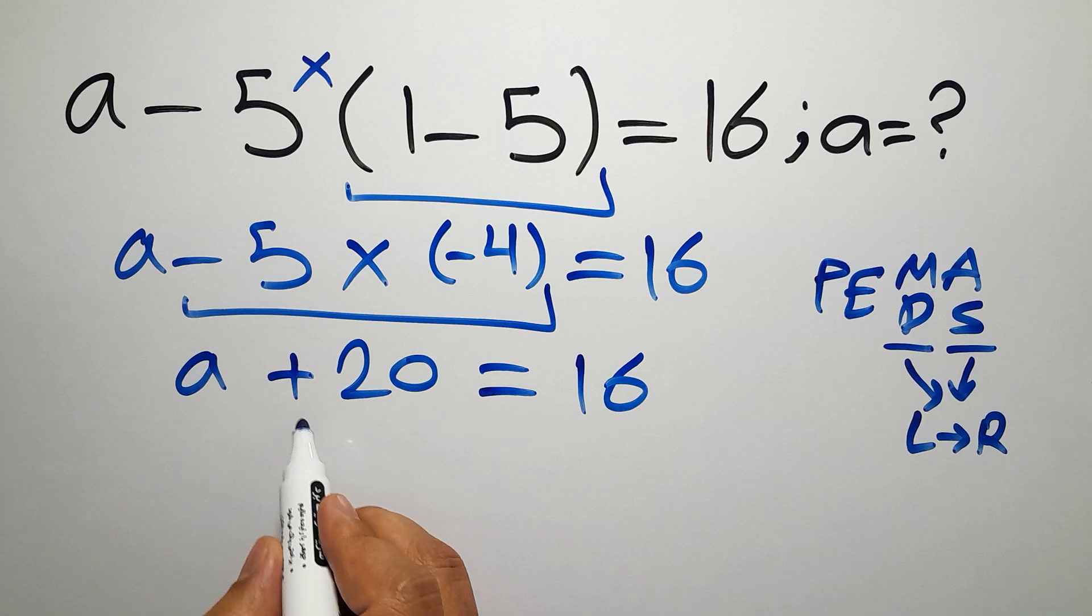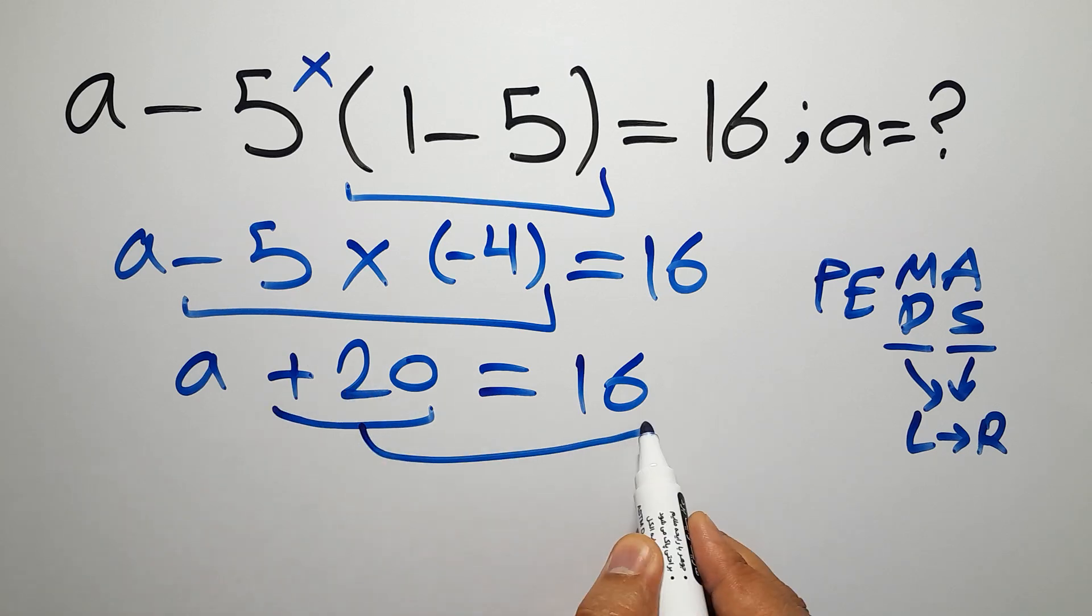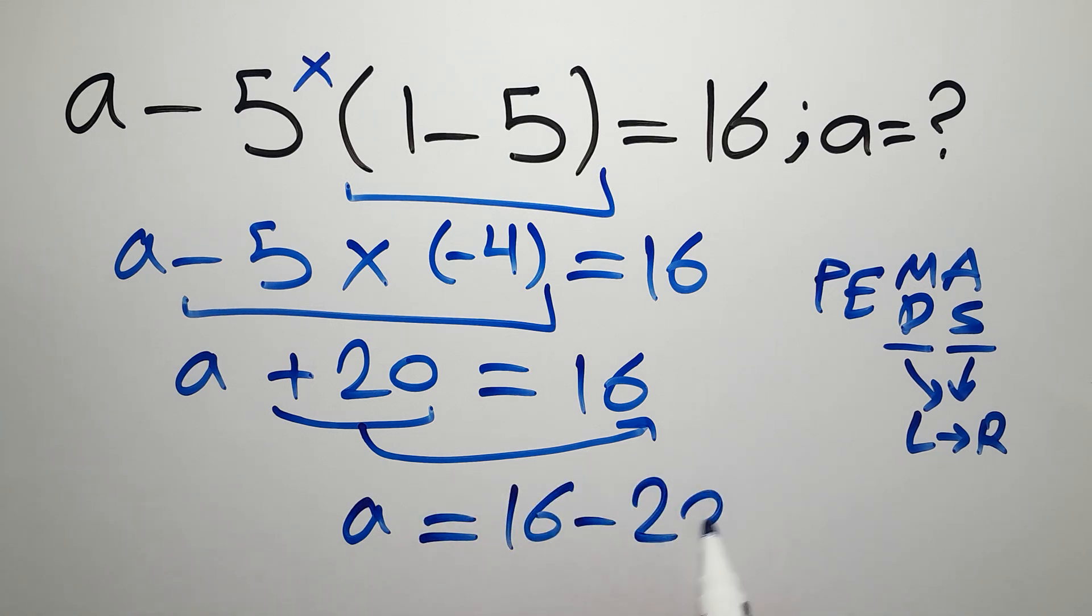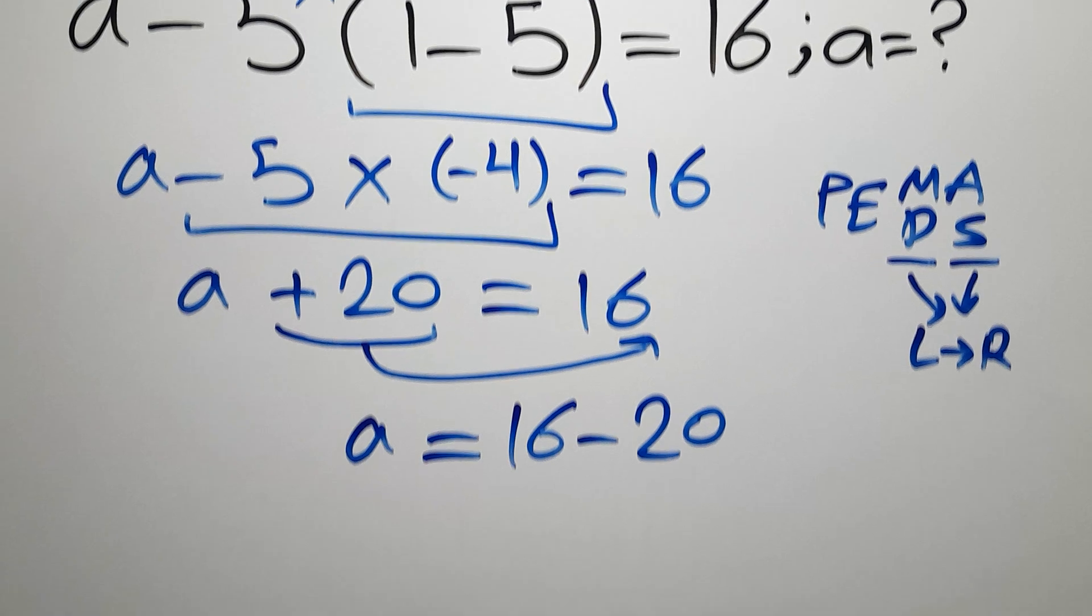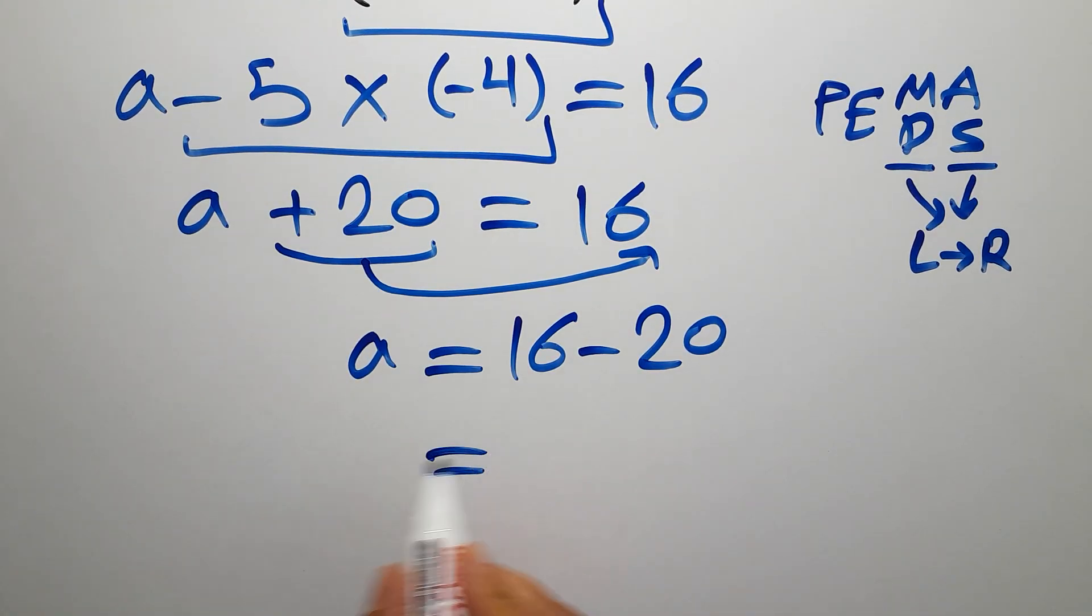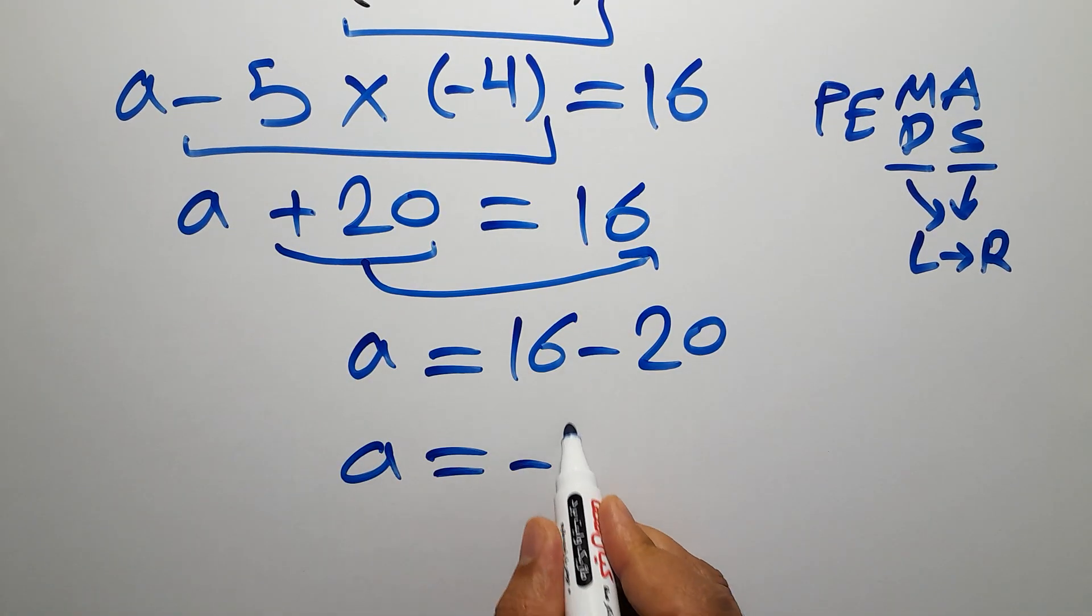Now let's move this plus 20 to the right-hand side. So A will be equal to 16 minus 20, which equals negative 4.